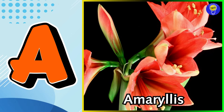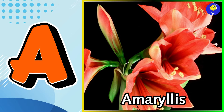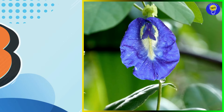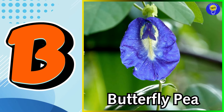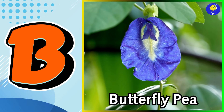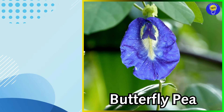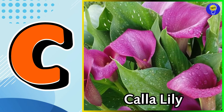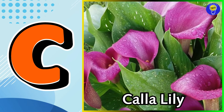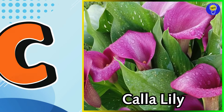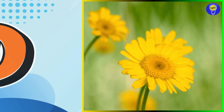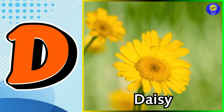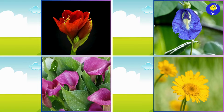A is for amaryllis flower. B is for butterfly pea flower. C is for calla lily flower. D is for daisy flower.